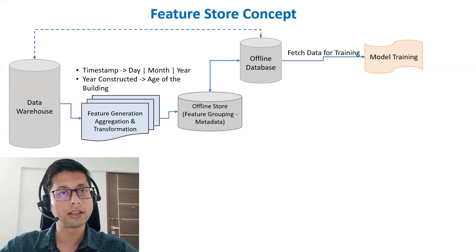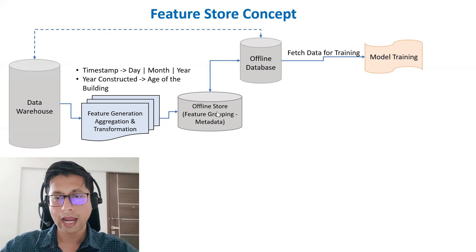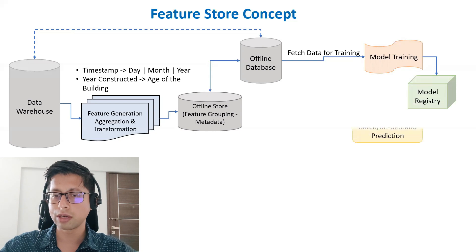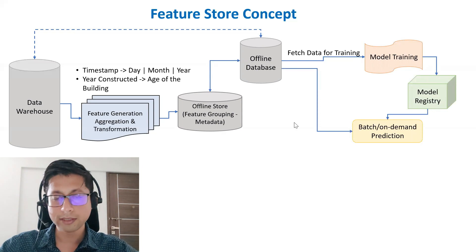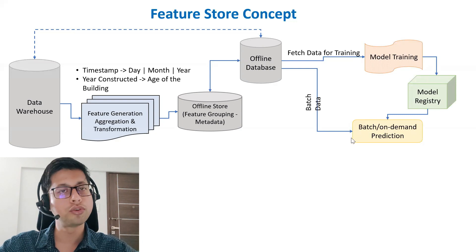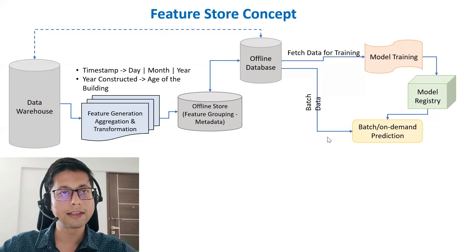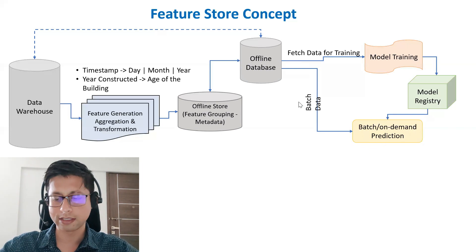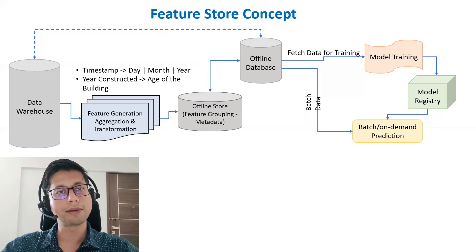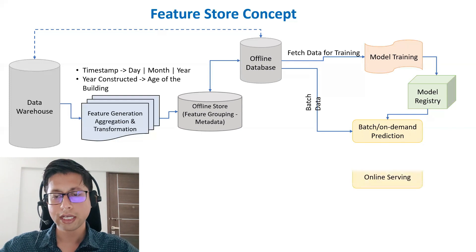For model training, we fetch data from the offline store where all pre-generated features are stored as metadata. The model is trained and stored in the model registry. For batch or on-demand prediction, we read the model from the registry and data from the offline store. At prediction time, you provide the IDs of records you want to predict for; features are extracted from offline store metadata and then the corresponding data is fetched from the offline database for batch prediction.